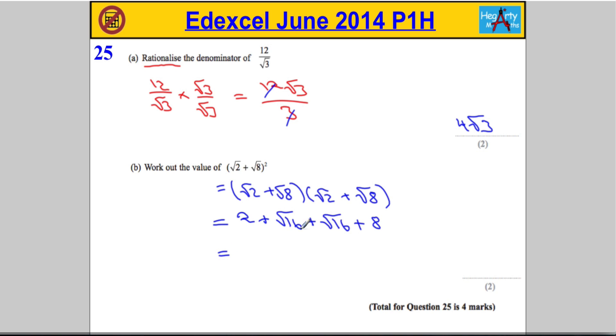Now, let's just tidy this up. Root 16 is clearly 4. So, we've got 2 plus 4 plus 4 again plus the 8. And tidying up, 2 and 8 is 10. 10 and 8 is 18. And we have the marks for that.